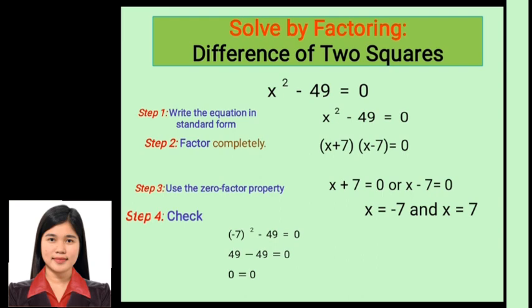Our first root is correct. Now checking x equals positive 7: 7² minus 49 equals 49 minus 49 equals 0. Both roots are correct.